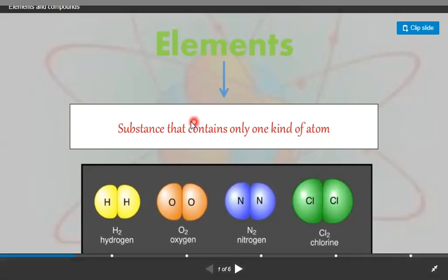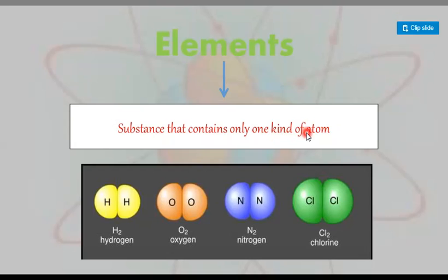Dear student, the definition of an element is that the substance that contains only one kind of atom is called an element. An element is a pure substance which cannot be split up into other simpler substances by any ordinary physical or chemical process. This is their second definition.